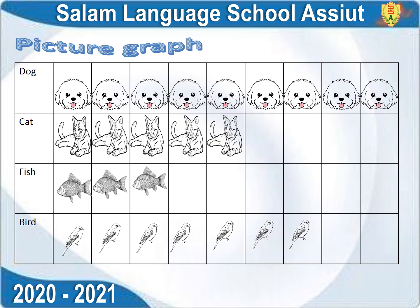Today we are going to make a picture graph about our favorite animals. I have four animals: cat, bird, fish, and dog. Every one of you choose one favorite animal.